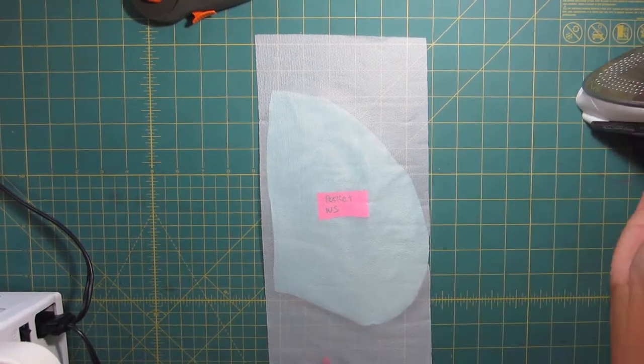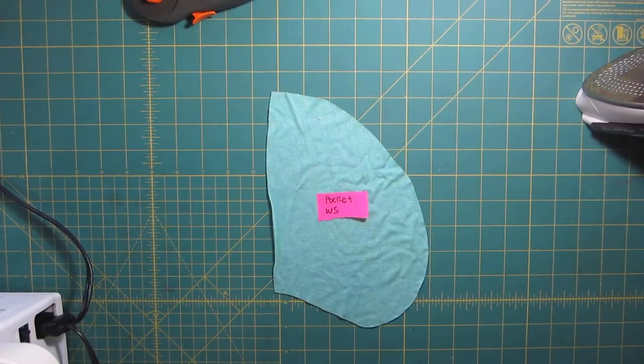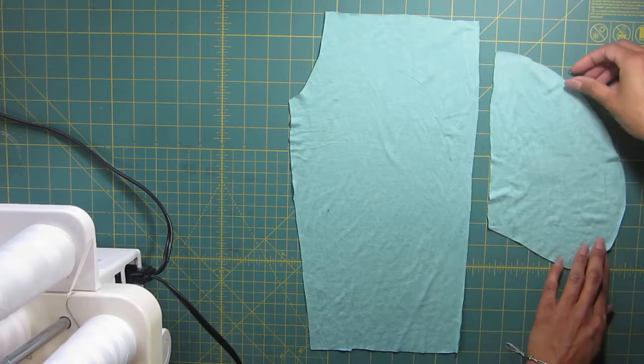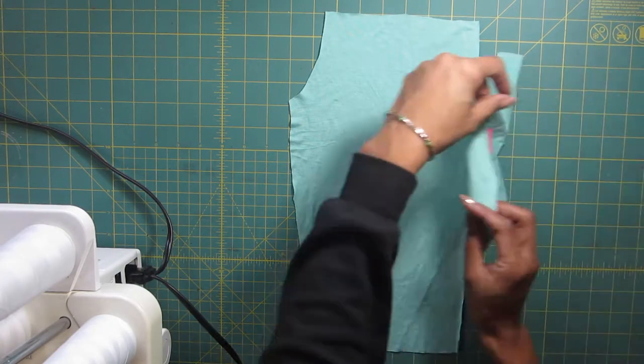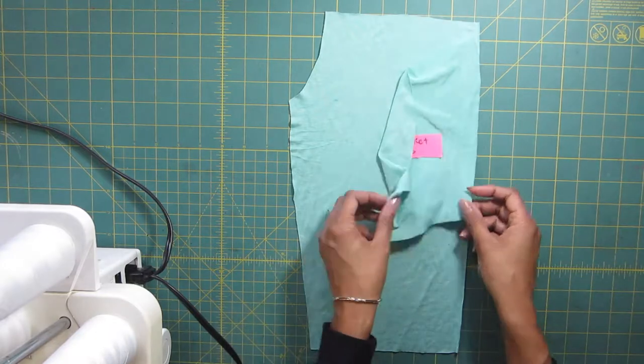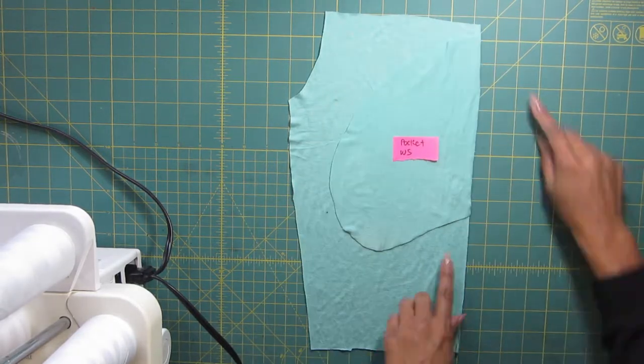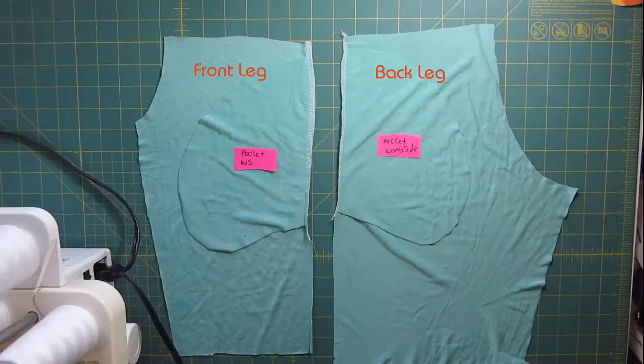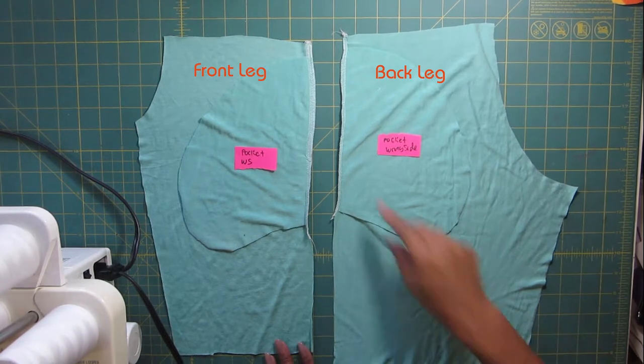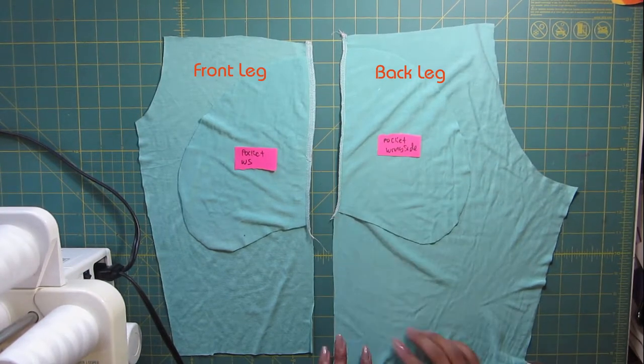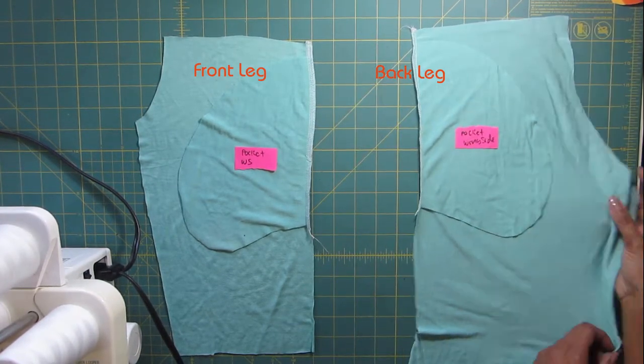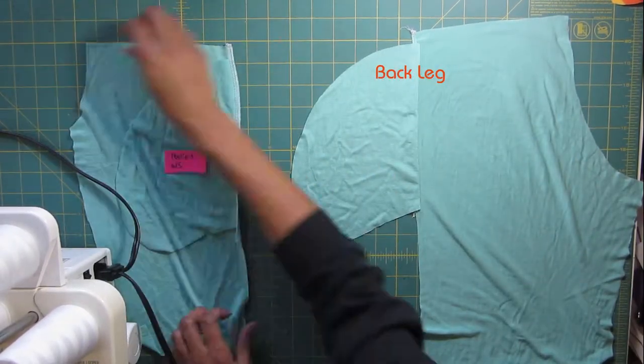I'm not going to use interfacing for this tutorial. Take the pocket and place it right sides together onto your pant leg, then sew down the side seam. Here's the side seam sewn. Then you would take the front and the back leg.